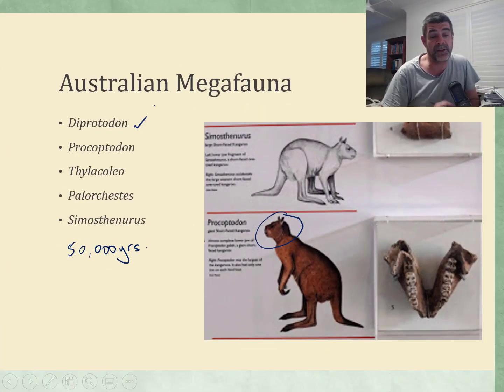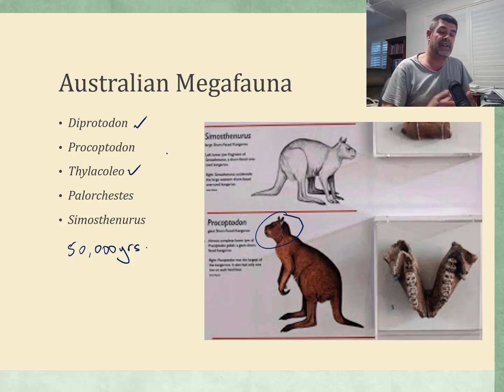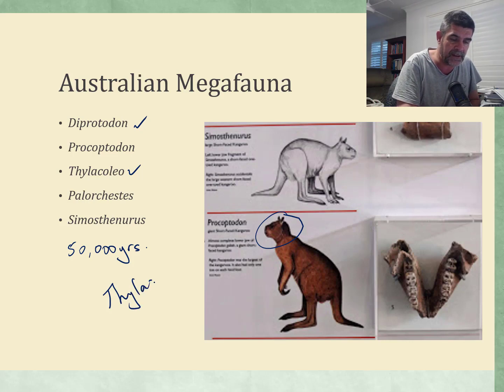The marsupial lion, Thylacoleo, and so many of these different types of large marsupials just disappeared from the fossil record. Even organisms that are more recent, like the thylacine, can be used to help us get a sense of what sort of factors may have contributed to the extinction of these giant animals.